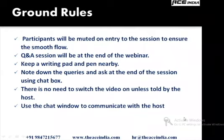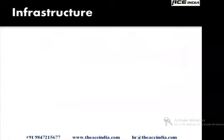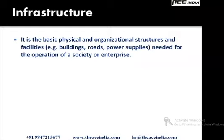Everyone coming into the MEP industry should understand that it starts from infrastructure. Infrastructure is basically needed to make things happen around us. A railway line, a road, a dam, a power plant, a metro line — these are all parts of infrastructure, along with buildings. Broadly, infrastructure includes the physical, basic organizational structures and facilities needed for the operation of a society or an enterprise.